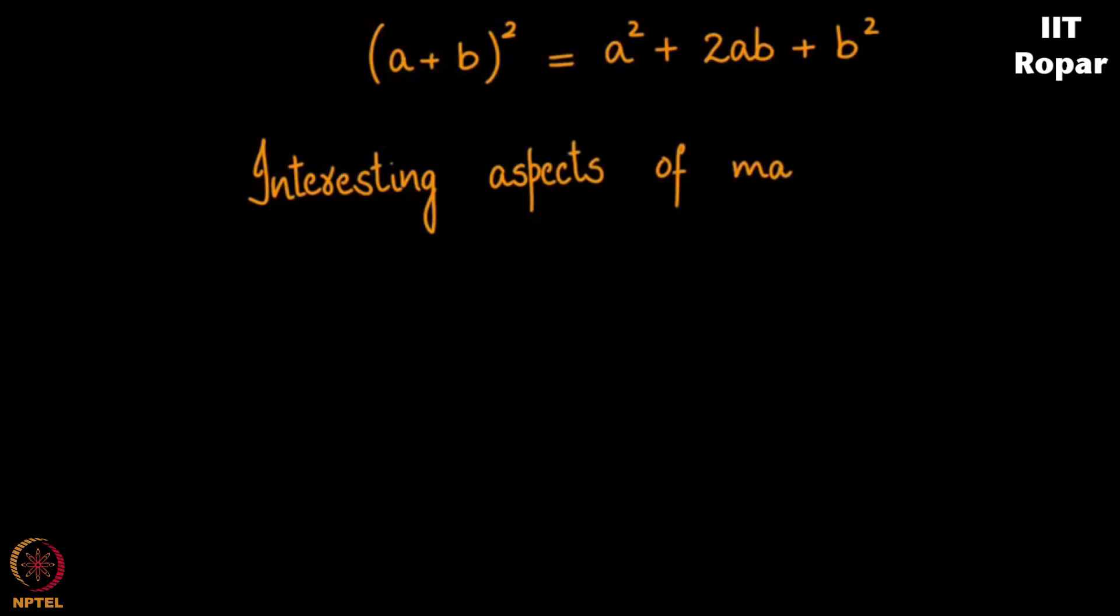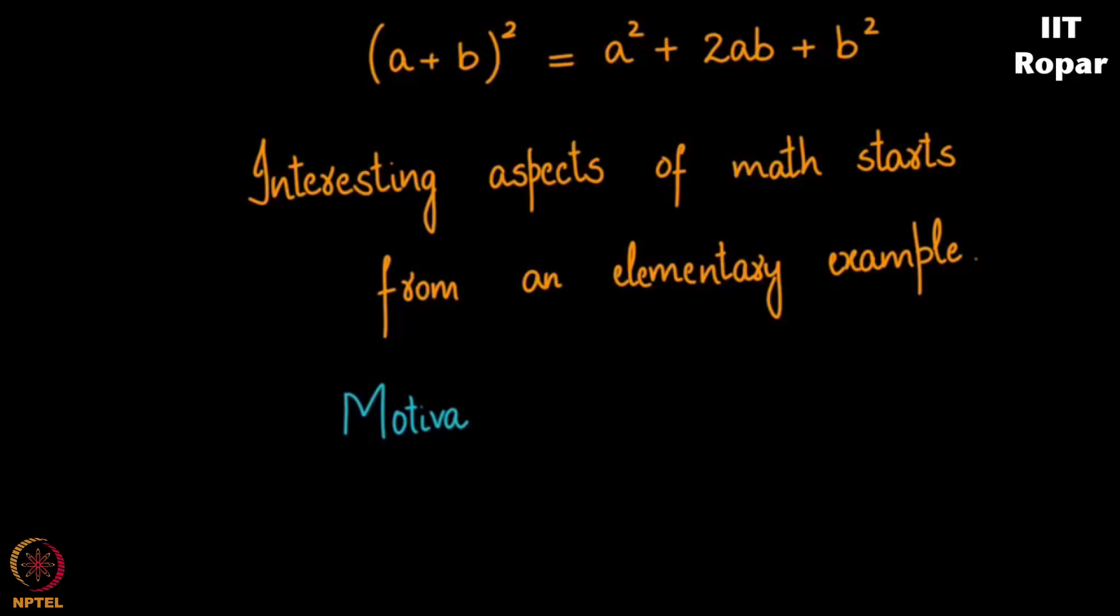What is a plus b the whole square? You are probably wondering what is this chap teaching? This is something that we learned in our primary school days. A plus b the whole square is a square plus 2ab plus b square. As you all know, some of the most interesting and most important aspects of math start from a very elementary example. And the motivation for this elementary example is simply a question such as this. You will now observe how a bunch of questions starting from a plus b the whole square will lead to a magnificent concept in discrete math.